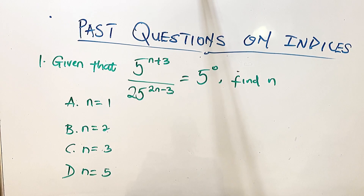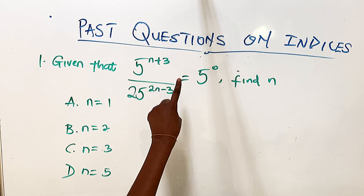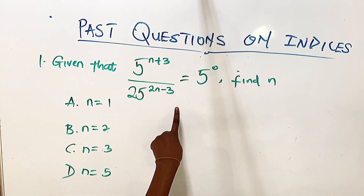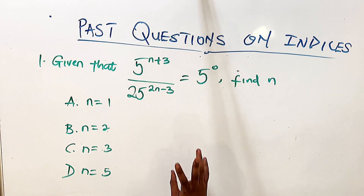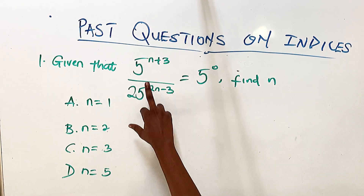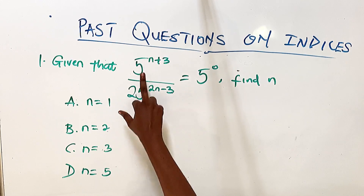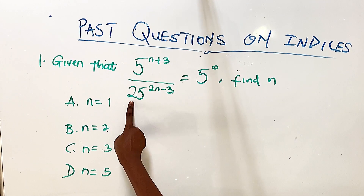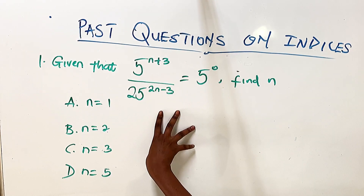The first question says: given that 5 raised to power n plus 3, all over 25 raised to power 2n minus 3, is equal to 5 raised to power 0, find the value of n. The first thing to notice is that all our values are powers of 5 or multiples of 5, so we want to put everything in base 5 and apply our laws of indices.